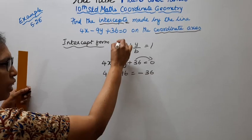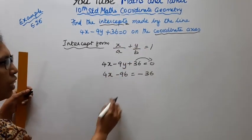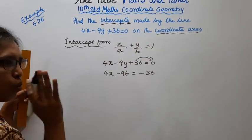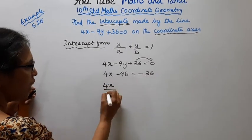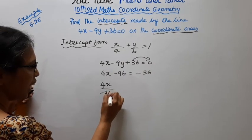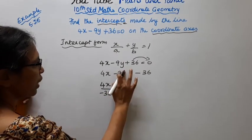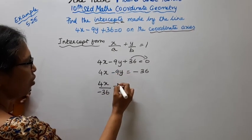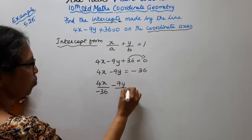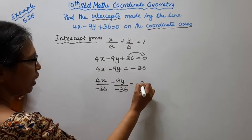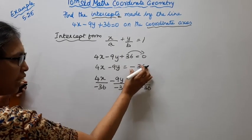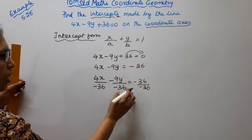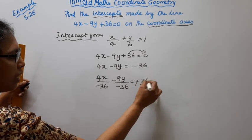We need x by a plus y by b equal to 1, where the right hand side is 1. So we divide the entire equation by minus 36: 4x by minus 36 minus 9y by minus 36 equal to minus 36 by minus 36. This cancels to 1.